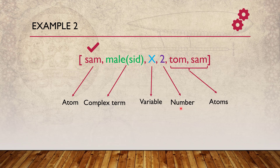Another interesting observation: Sam is both the first element and the last element of this particular list. This means a Prolog list can contain the same term more than once, and each occurrence is counted as a separate element. So the length of this particular list is 6.